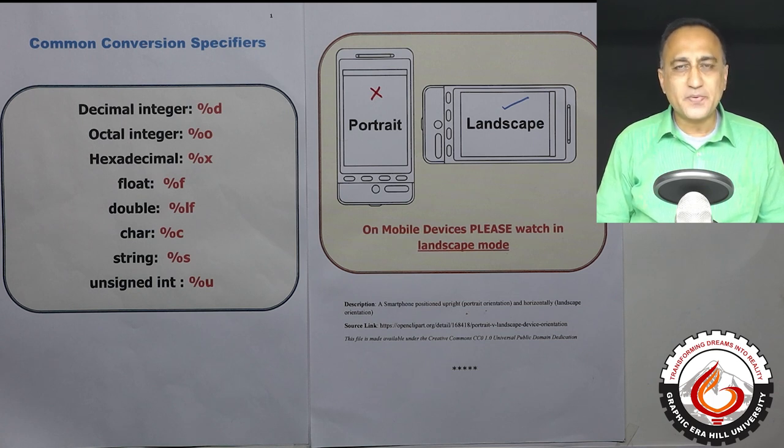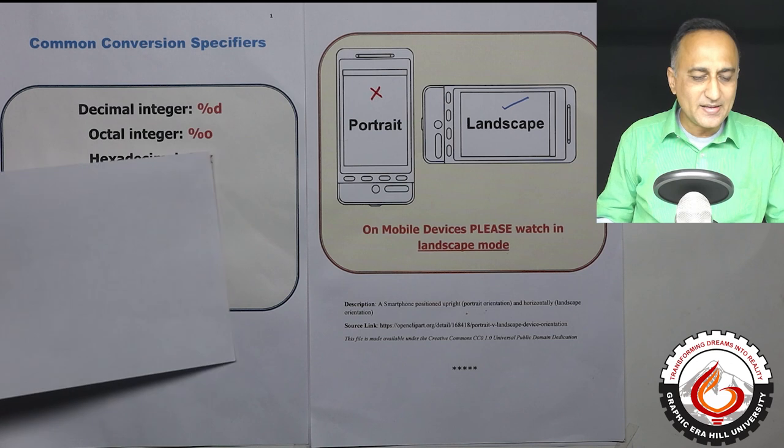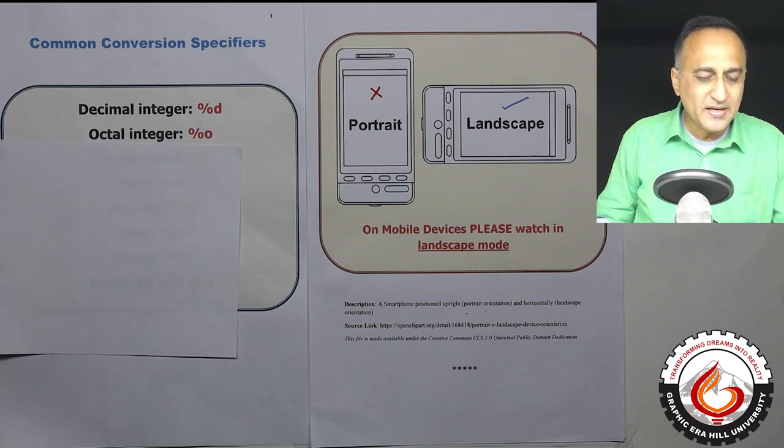During our discussion of the printf output statement and the scanf, I had told you the conversion specifiers determine what type of data you are reading and printing because C really does not care about what kind of data you read and write because for it data is simply ones and zeros. So it is your responsibility to use the conversion specifiers in a meaningful manner and then determine how the data should be treated.